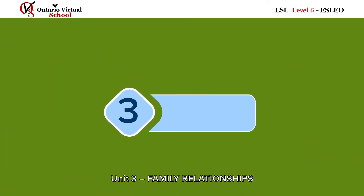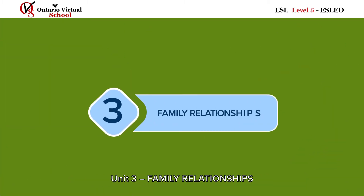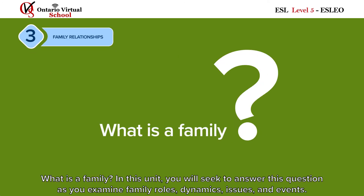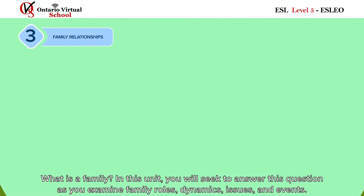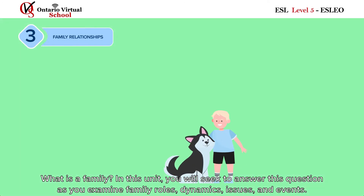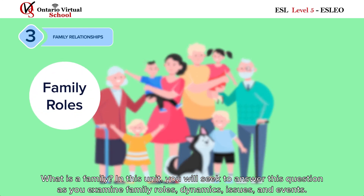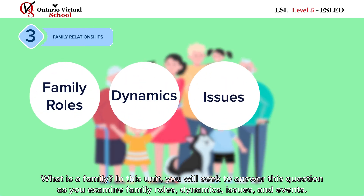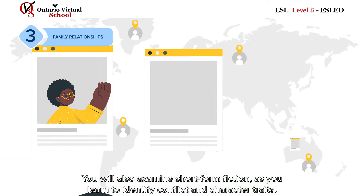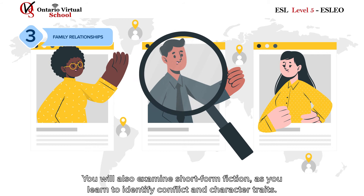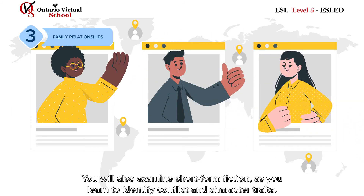Unit 3: Family Relationships. What is a family? In this unit, you will seek to answer this question as you examine family roles, dynamics, issues, and events. You will also examine short-form fiction as you learn to identify conflict and character traits.